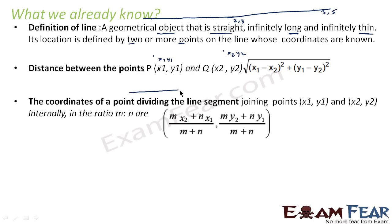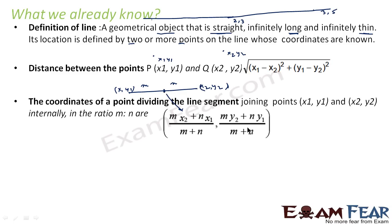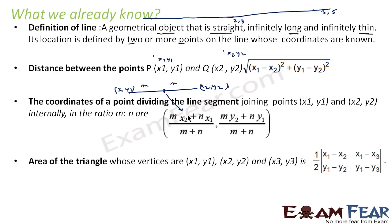Also, if you have a line segment with endpoints x1, y1 and x2, y2, and you want to divide it in the ratio m:n, the coordinates of the dividing point are: x = (mx2 + nx1) / (m + n) and y = (my2 + ny1) / (m + n). This is the section formula.